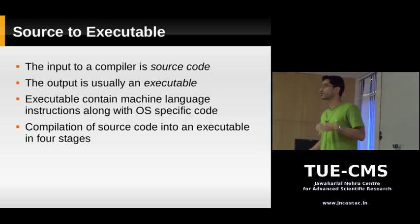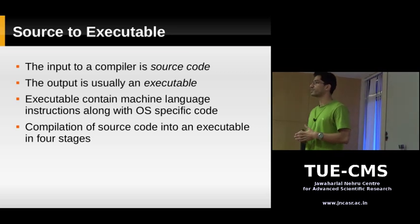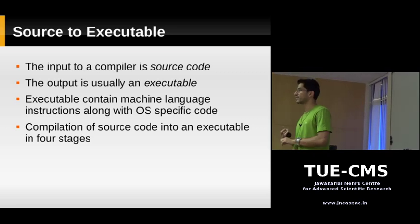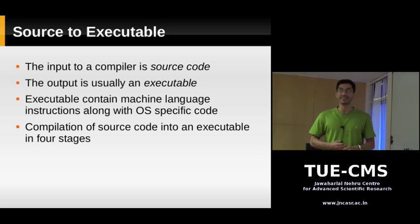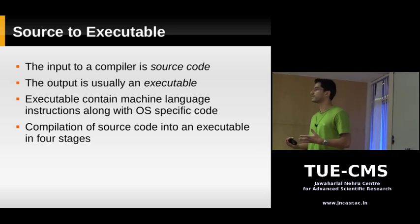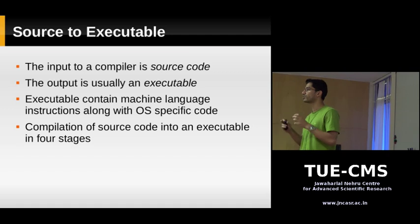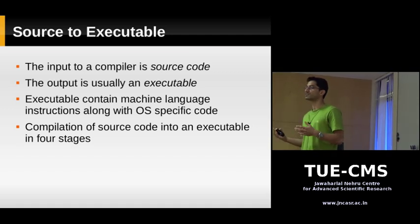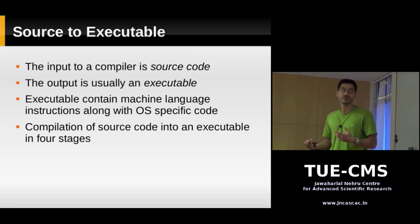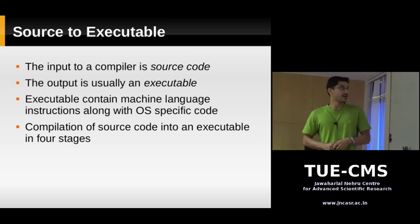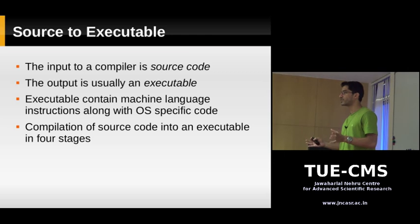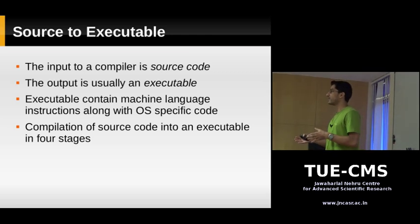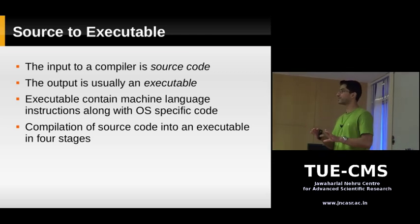The source code is the input you give to your compiler — your C language or Fortran language program which you write. This is the source code. The output of the compiler is your executable — a program that is ready to run. You can type the name of the program and it's going to run and do whatever you programmed it for. The executable contains machine language code along with some instructions which are specific to your operating system.